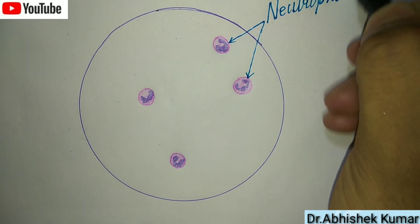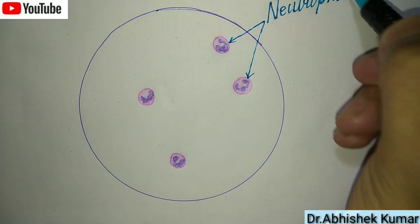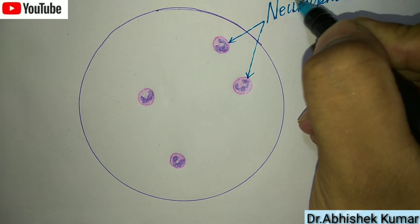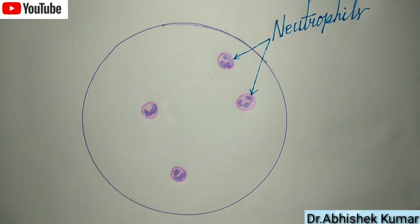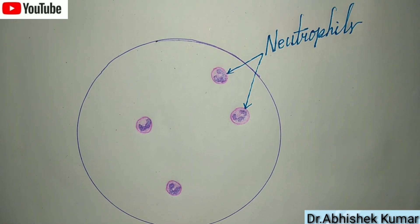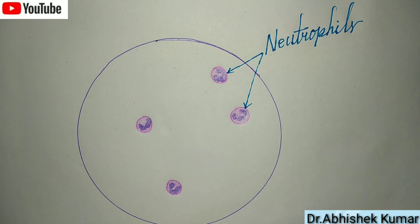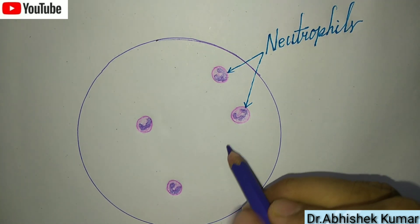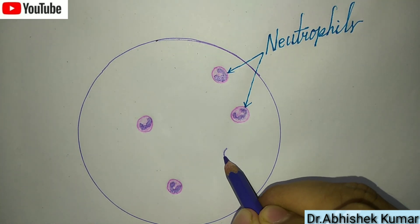You can see — neutrophil. This one is neutrophil. This is the microscopic structure of neutrophil.